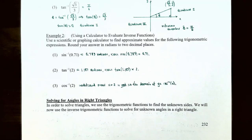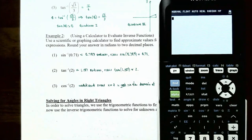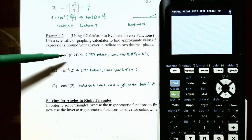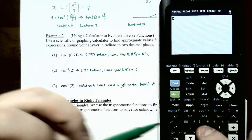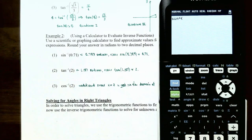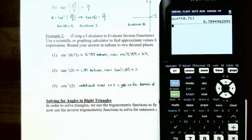Example 2: use a scientific or graphing calculator to find approximate values, rounded to two decimal places in radians. Number 1: inverse sine of 0.71 — in other words, what angle theta in radians gives sine(theta) = 0.71? Press second and then the sine button to get inverse sine. Make sure your calculator is in radians. Inverse sine of 0.71 gives approximately 0.79 radians — meaning sine of 0.79 radians is very close to 0.71.